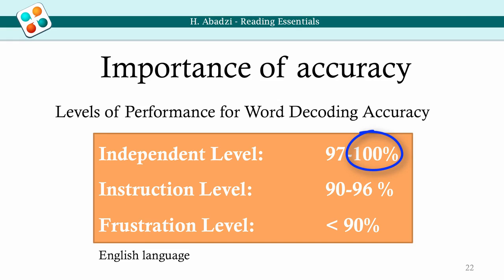Accuracy easily rises to 100% in consistently spelled languages using the Roman script. By contrast, syllabic scripts are more visually complex, and students may make many mistakes even in grade 4. To improve accuracy, students need corrective feedback, and many poor students get very little.